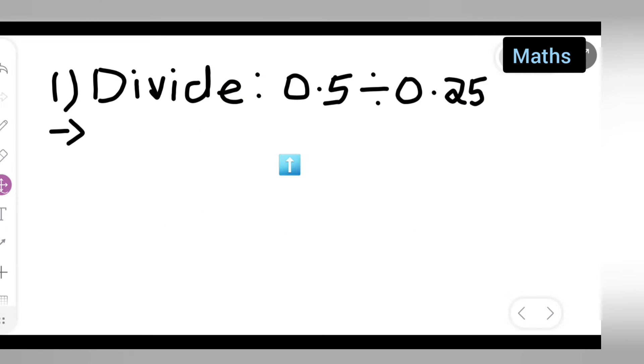First, you can take down the question: divide 0.5 by 0.25. Here, the numbers are with decimal points.